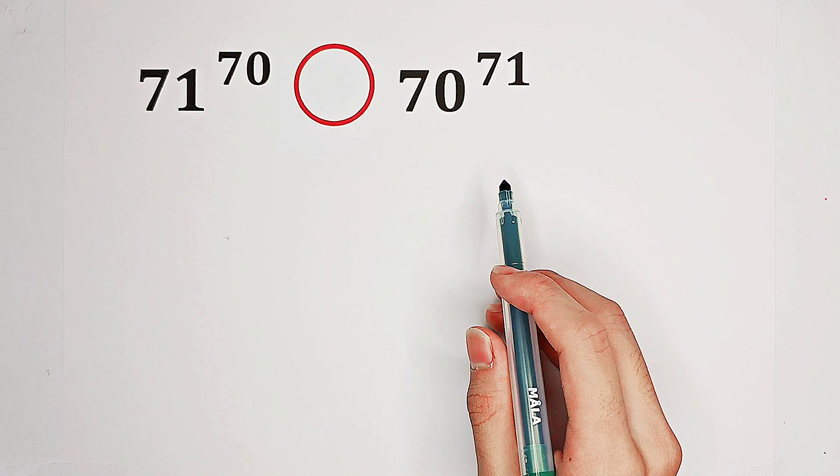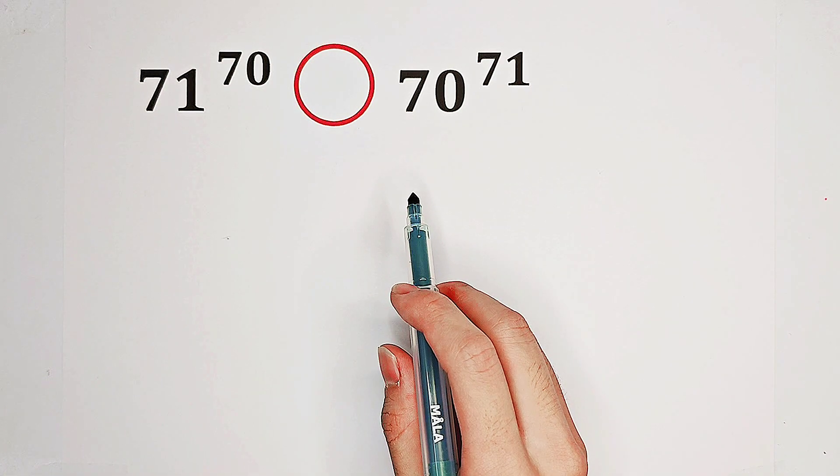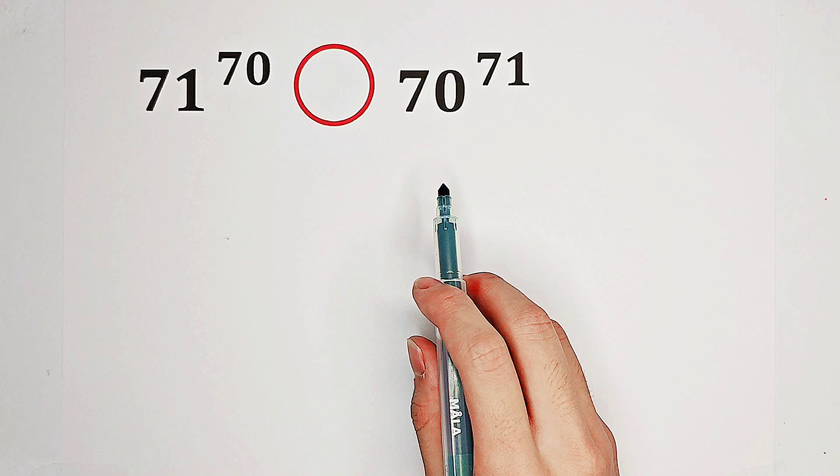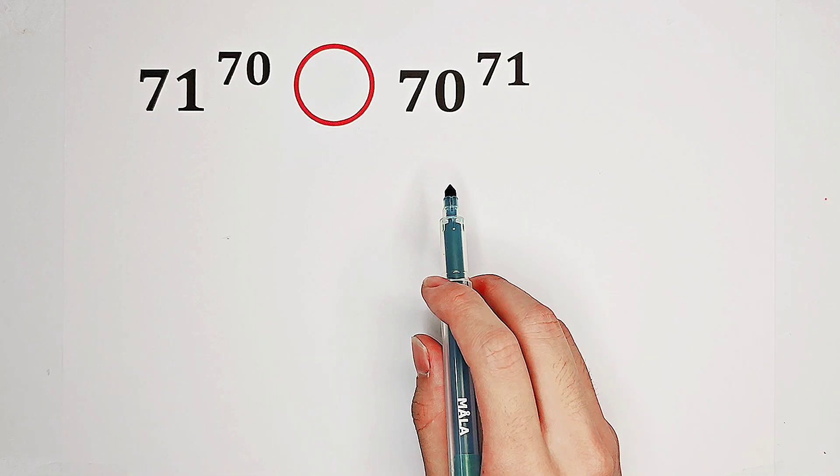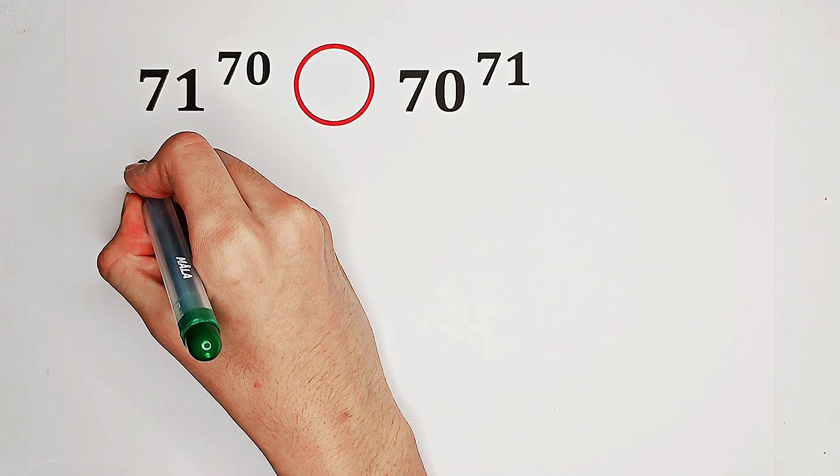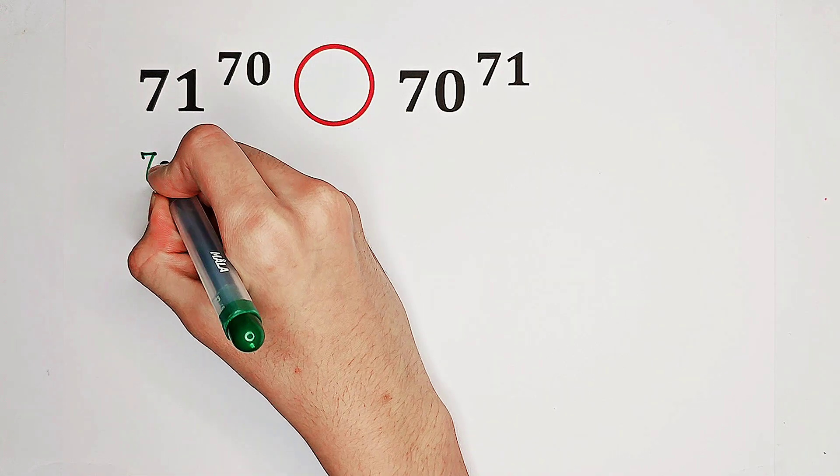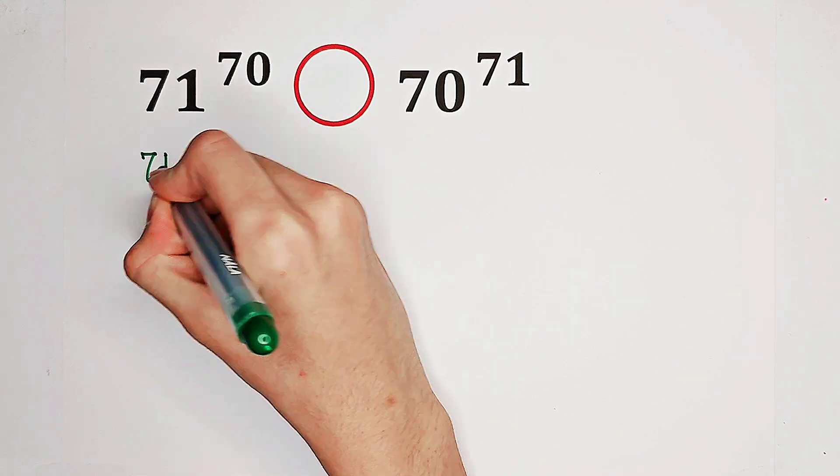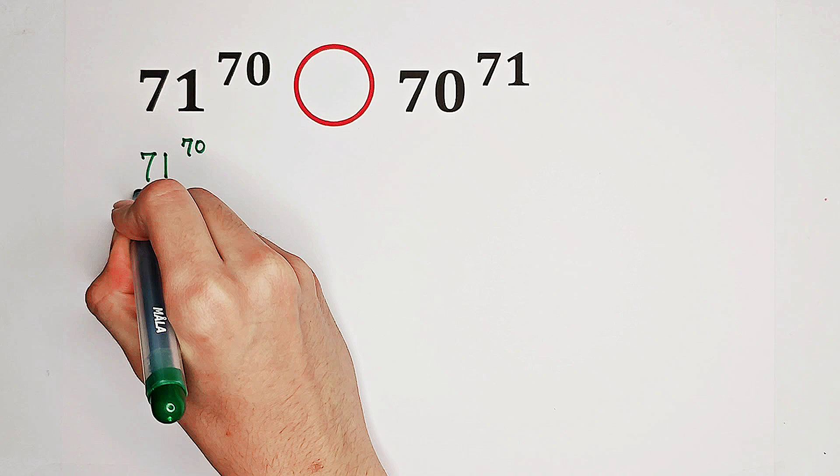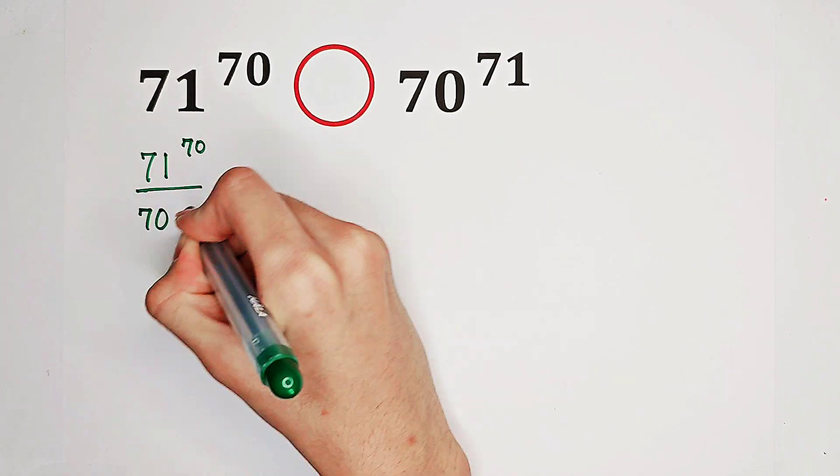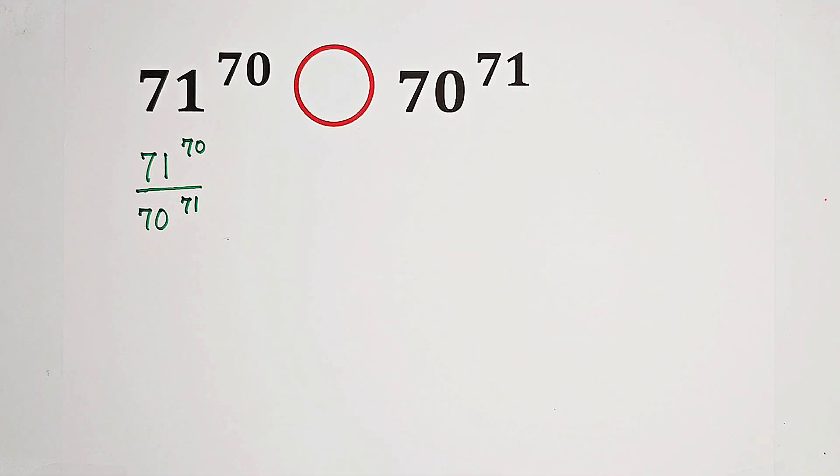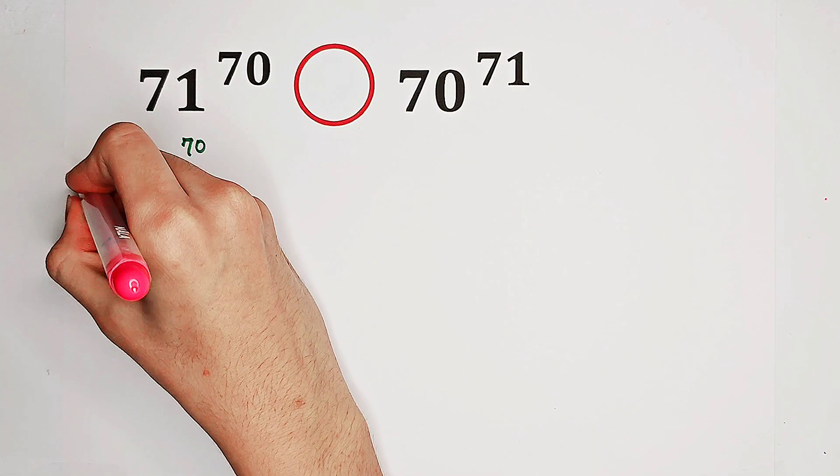Clearly, we have to have a look at the division, because they're both exponential forms. So, let's just observe 71 to the power of 70 over 70 to the power of 71. And we have to compare this number with 1.